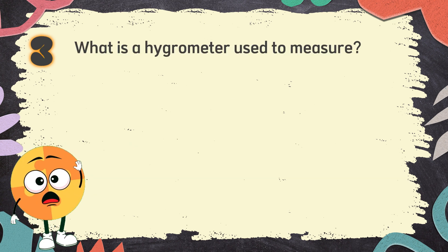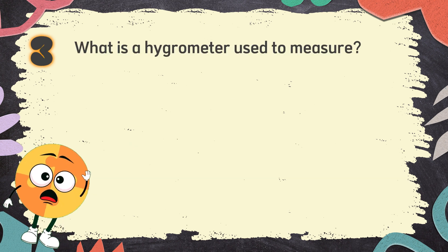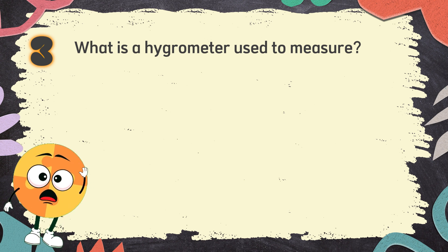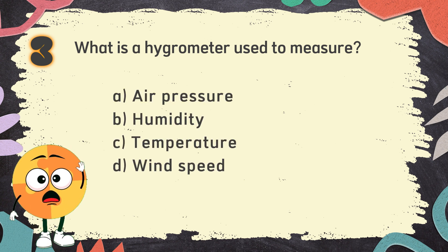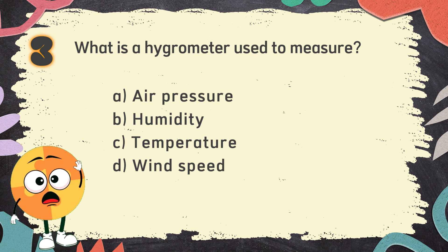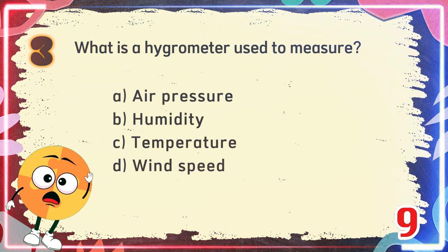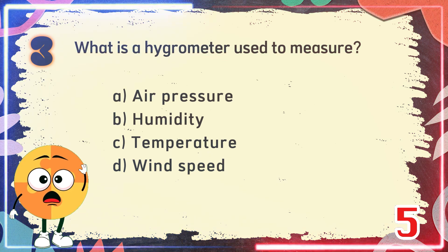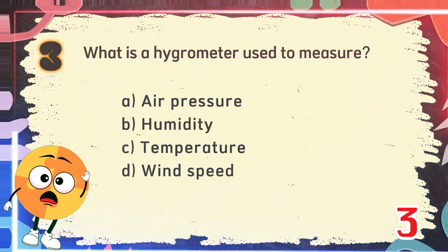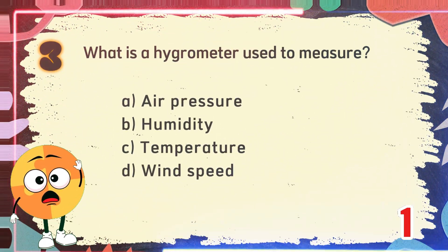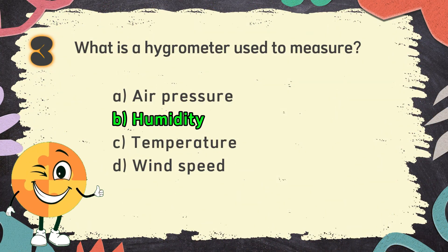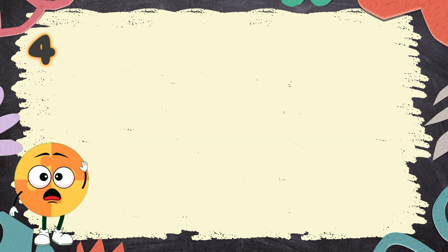Number 3. What is a hygrometer used to measure? The choices are: A. Air pressure. B. Humidity. C. Temperature. D. Wind speed. The correct answer is B: humidity.